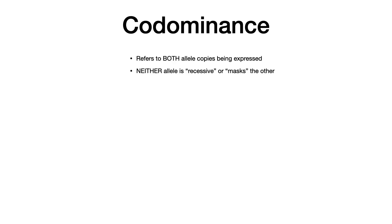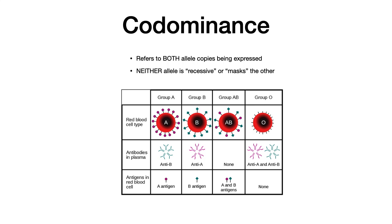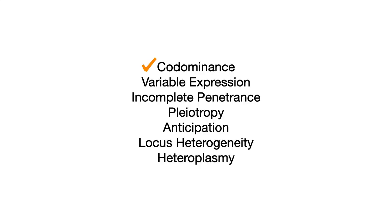Let's start with codominance. Codominance refers to when both allele copies are expressed. Neither of the alleles is recessive and neither will mask the other. The very high yield clinical example is ABO blood type. If somebody is blood type AB, neither A nor B is recessive — they're codominant, so both are expressed. The takeaway is that neither allele is recessive and both are expressed; the example is AB blood type.